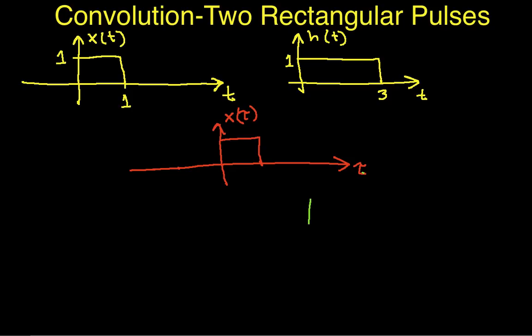So if we take h and flip it about the line at tau is equal to zero, then it looks like this. So it goes from minus three to zero at an amplitude of one. So this is h of minus tau.